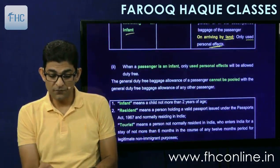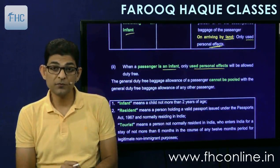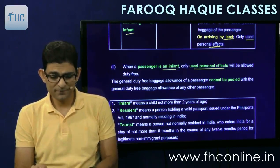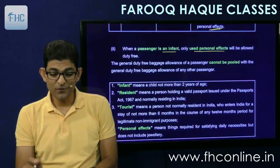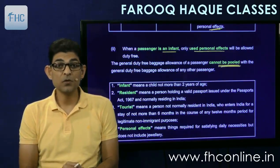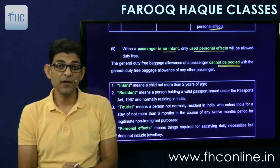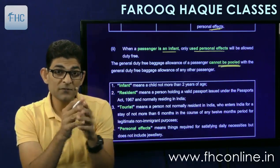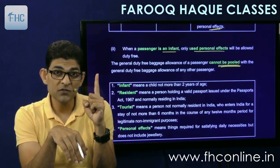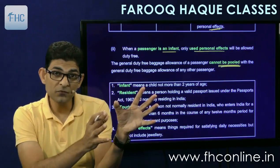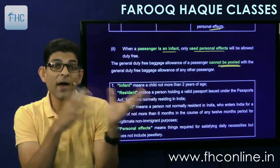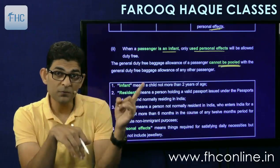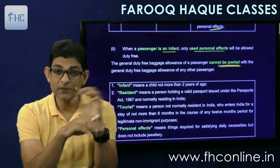When a passenger is an infant, only used personal effects are allowed duty-free — no goods. Another important point: these exemptions cannot be pooled. If four family members travel together and bring one TV worth 6 lakh rupees, they cannot pool their 50,000 exemptions to claim 2 lakhs total. Only one person can claim 50,000 exemption for one item — it cannot be pooled.